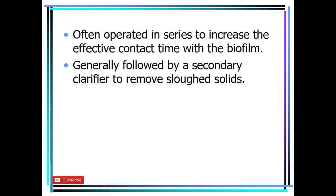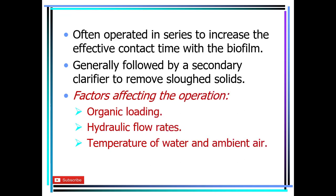Normally, trickling filters are operated in series — two or sometimes three trickling filters in series, not in parallel. This guarantees more effective contact time with the biofilm. Normally they are followed by a secondary clarifier, which removes the sloughed solids and biomass before the effluent is discharged or sent to further treatment units.